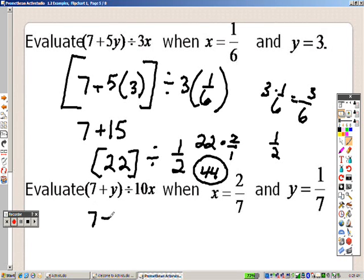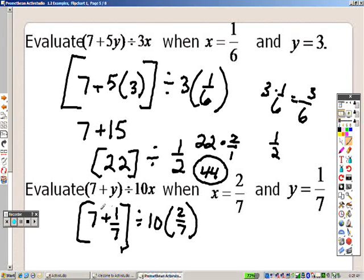Over here it would be 7 plus 1 over 7, and that's all in parentheses, divided by 10 times 2 sevenths. So I do it in parentheses. And when I'm doing this, I need to make them have the same denominators. So I wrote this over 1. To have the same base, I'd multiply both the top and the bottom by 7. So I get 49 over 7 plus 1 over 7, which gives me 50 over 7 because you add the tops and keep the denominator the same.